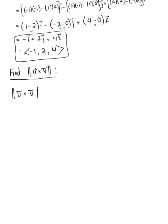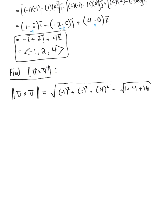The magnitude of vector u cross v is the square root of (-1)² + 2² + 4², which equals the square root of 1 + 4 + 16. That gives us the square root of 21.